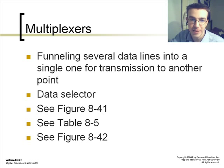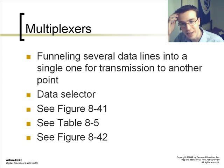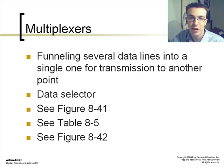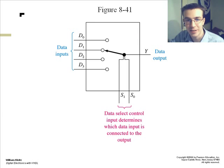And multiplexers is another function this chapter details with, and it's funneling several data lines into a single one for transmission to another point. It's a data selector, basically. So, it takes the data inputs and it selects which data input it wishes to apply to its output.